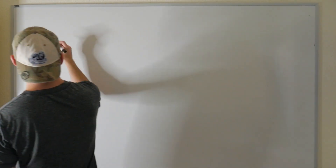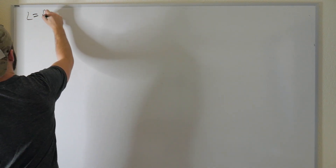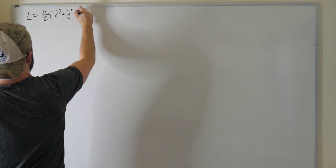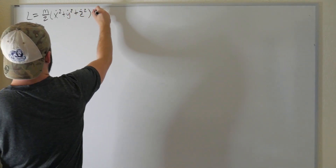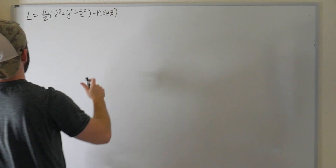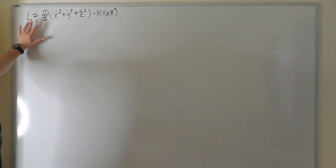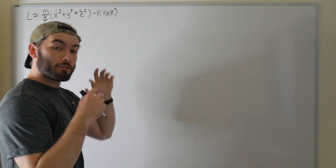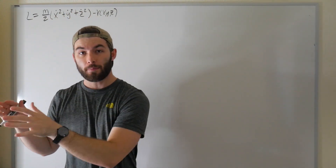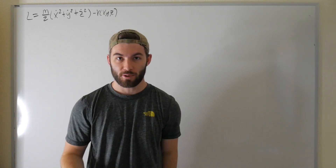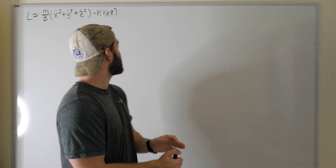In yesterday's video we started off by defining a Lagrangian of the form m over 2 times (x_dot squared plus y_dot squared plus z_dot squared) minus a potential that depends on x, y, and z. We're using this as a jumping off point — we want to convert this into cylindrical coordinates, find the generalized momentum in cylindrical coordinates, and then from there construct our Hamiltonian.